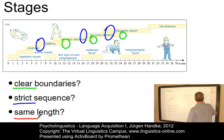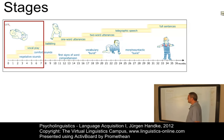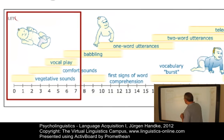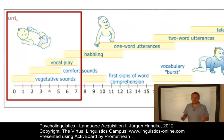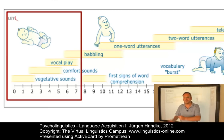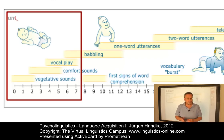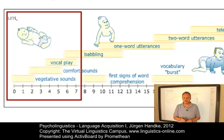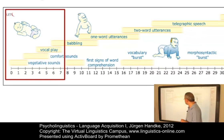Let us now look at the stages in greater detail. At a very early age, we can identify three stages: vegetative sounds such as crying, burping or sucking noise; comfort sounds such as cooing and laughing; and a stage normally labeled vocal play, where children produce speech-like sounds where, interestingly, vowels emerge before consonants.